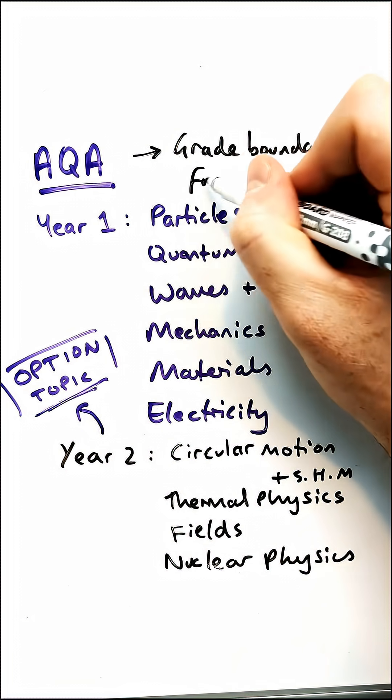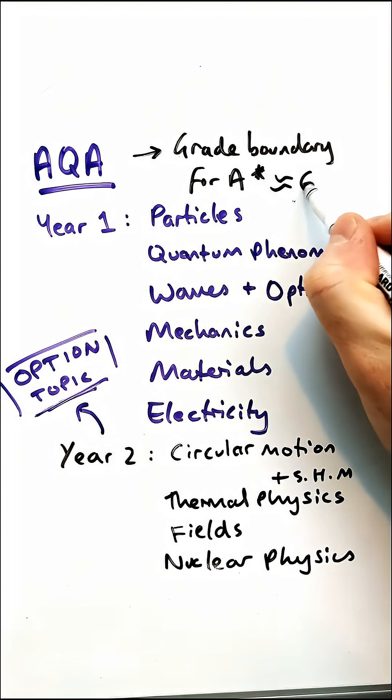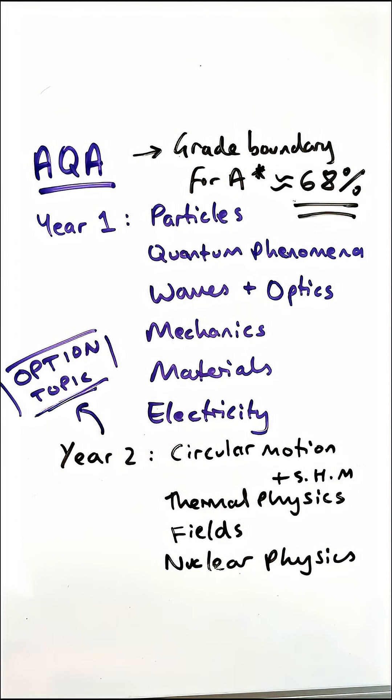For AQA, the grade boundary to achieve an A star is really low - it is about 68 or 69 percent. That's not because it's easy, that's because it's hard. The questions are really hard in A-level physics, especially for AQA, so the grade boundaries are lower than they would have been in other exam boards usually.